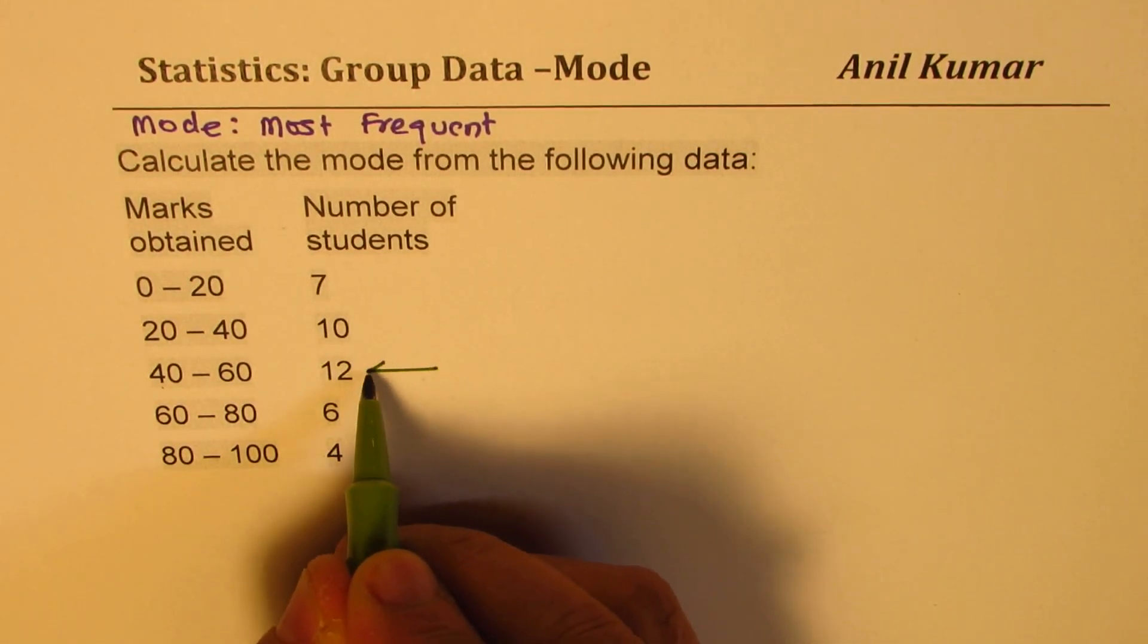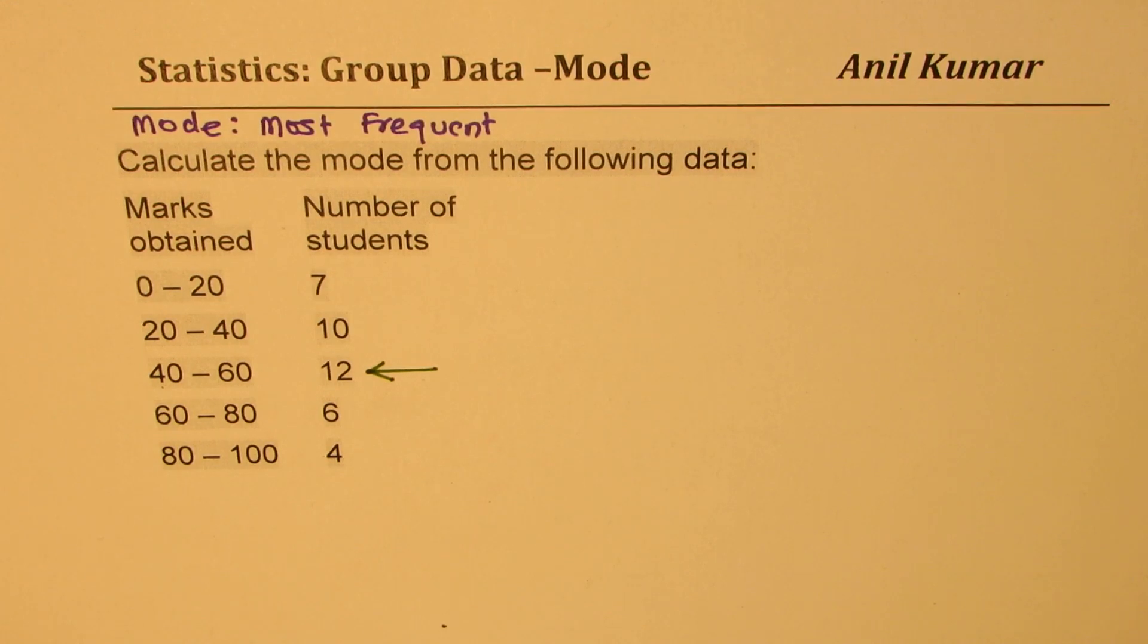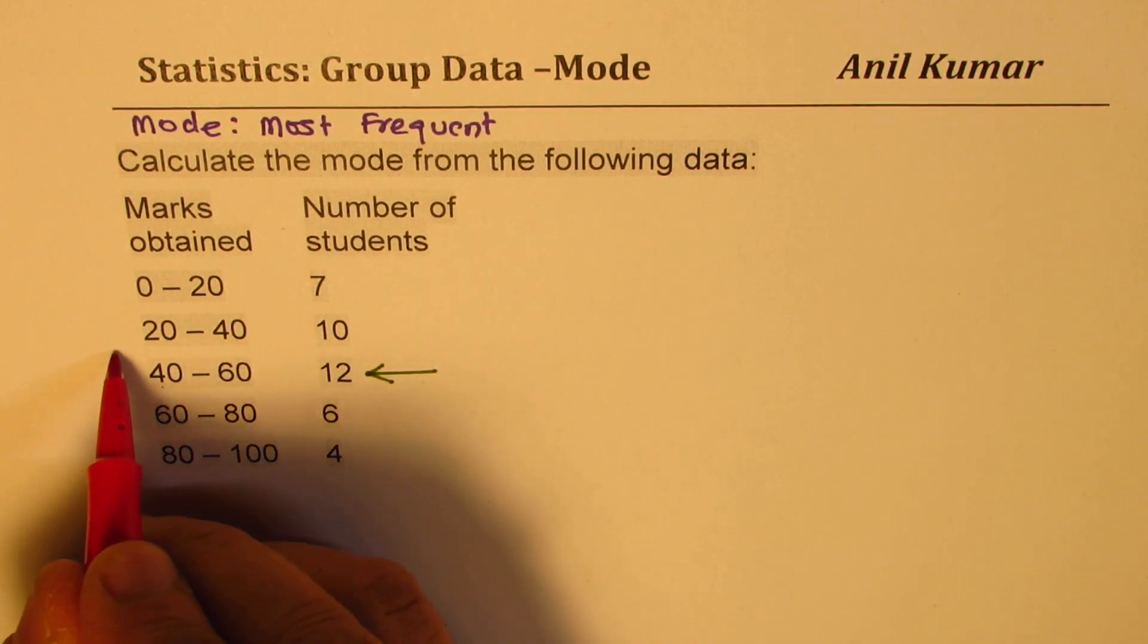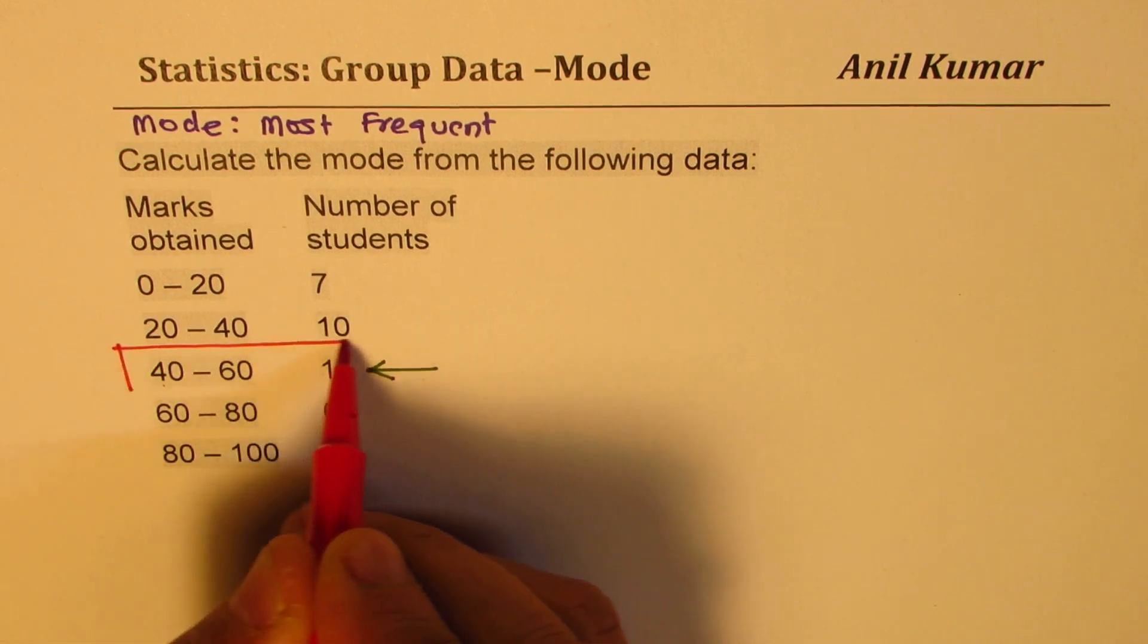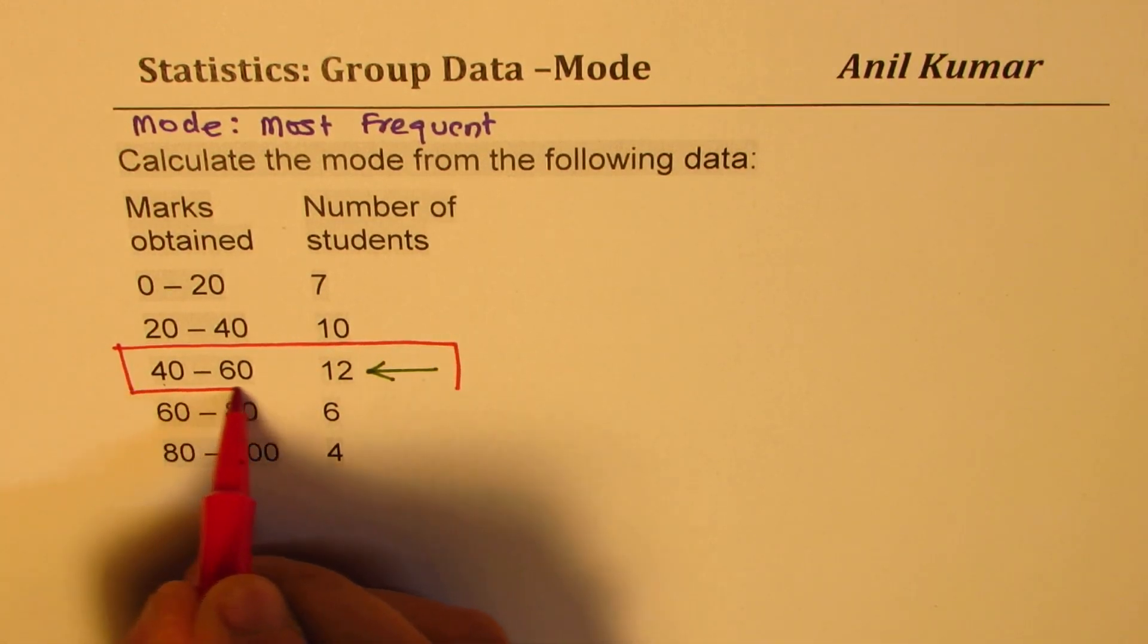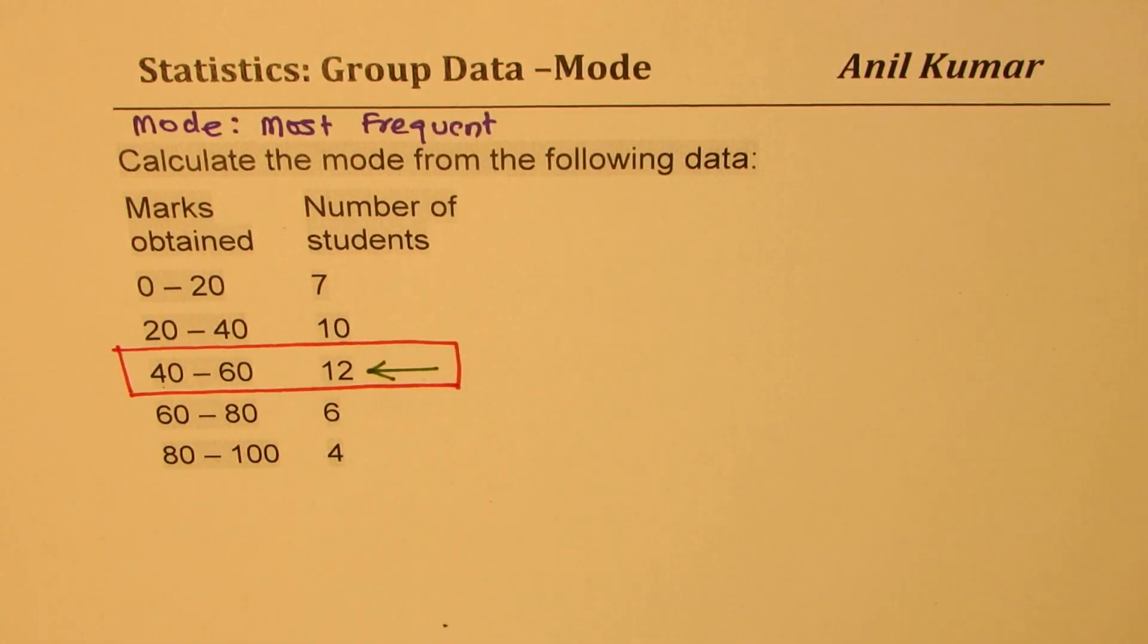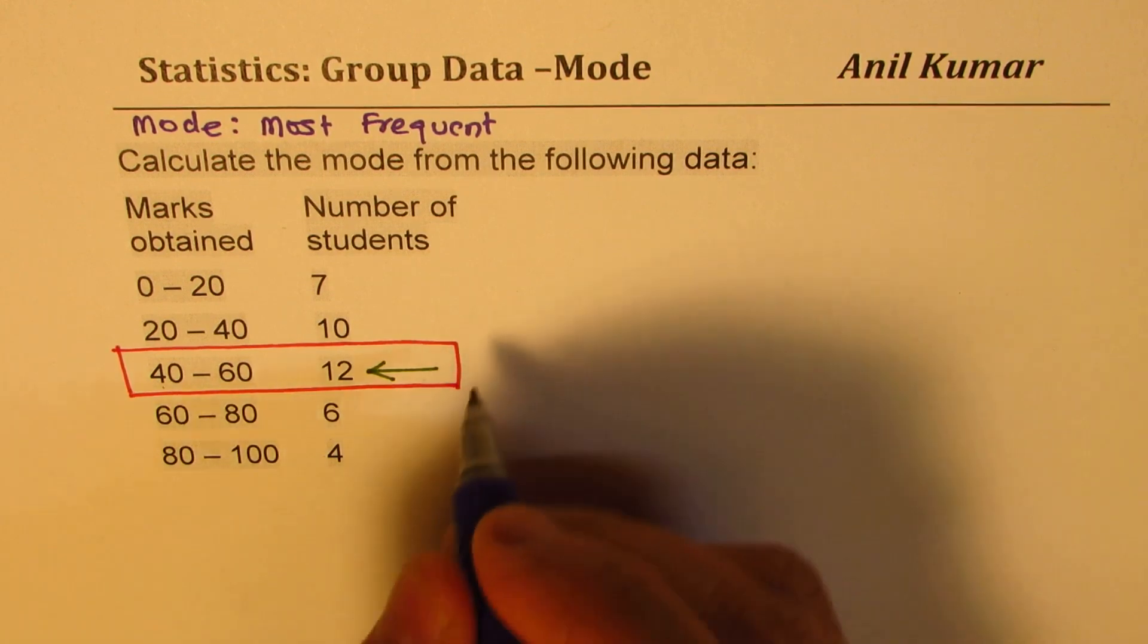So the steps are, you look for the highest number in the frequency, highest frequency is 12. That really means that this is the interval in which we are expecting mode. So mark this. And we have a special name, this is called the modal class.